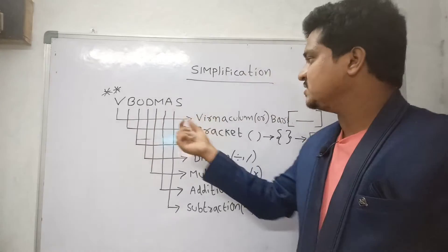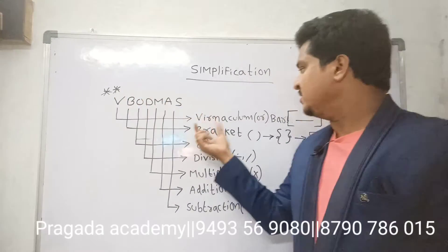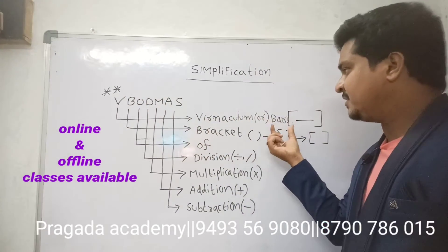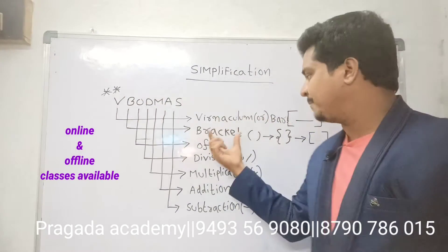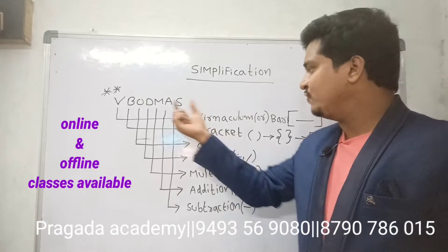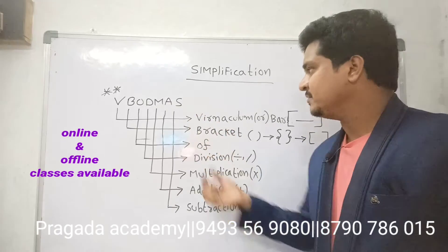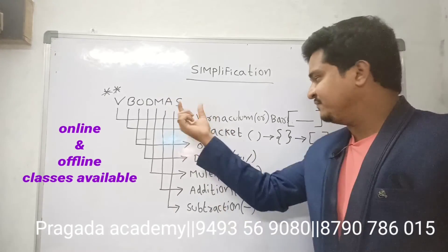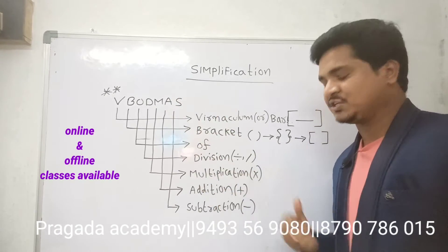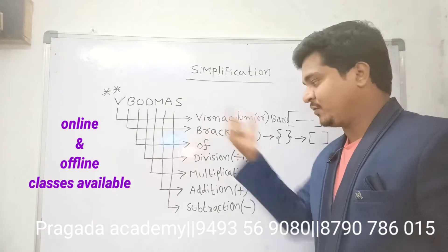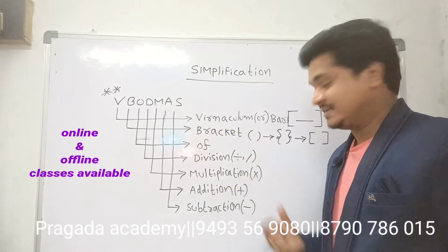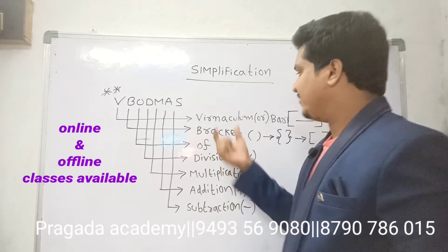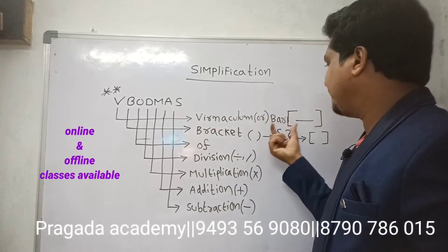VBODMAS: V for vinculum or bar, B for bracket, O for of, D for division, M for multiplication, A for addition, S for subtraction.